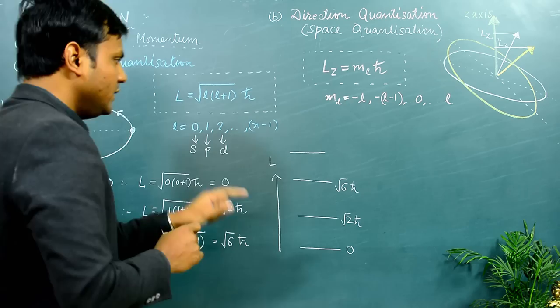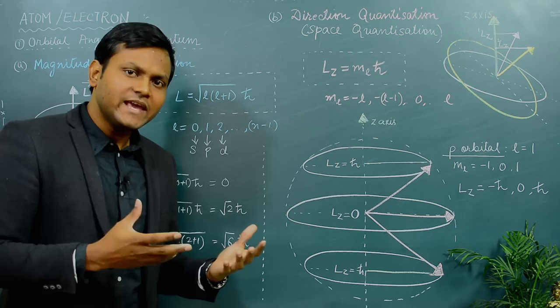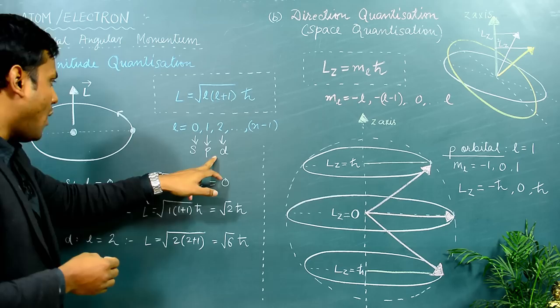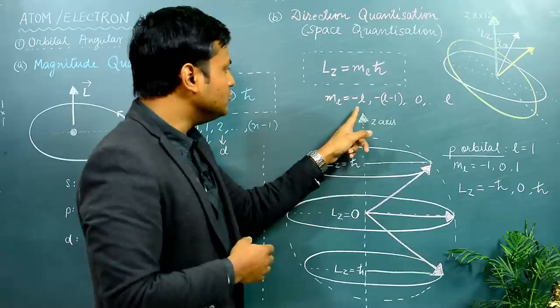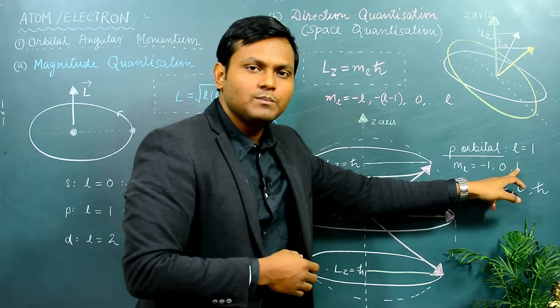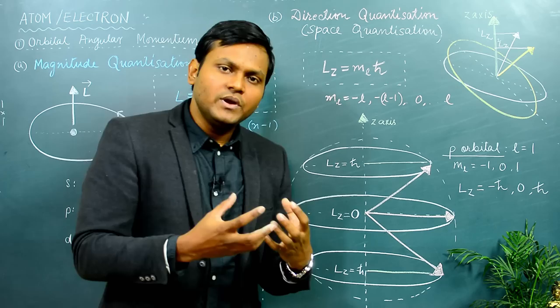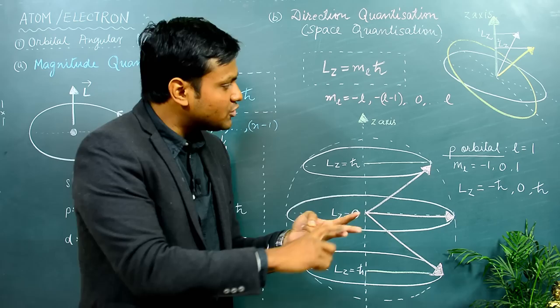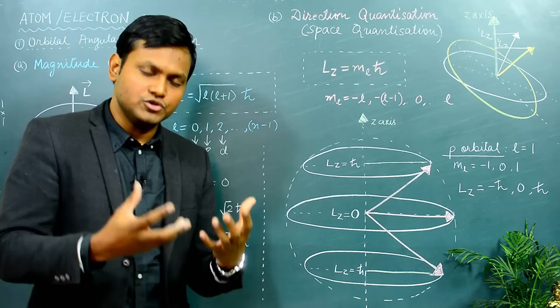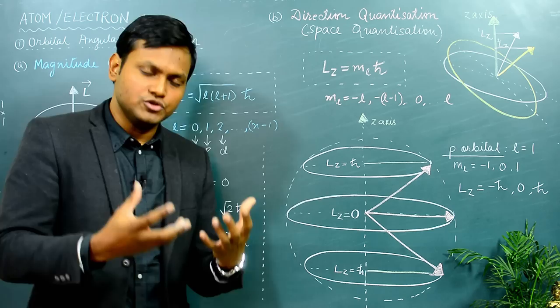For the p orbital, the azimuthal quantum number l equals 1, so ml can have values of minus 1, 0, and plus 1 — three values. Therefore, the z-component of the angular momentum can only have three values: minus ℏ, 0, and plus ℏ. The z-axis can correspond to the direction of an external magnetic field, since the electron is a charged particle with a magnetic moment and will orient itself in certain particular directions.